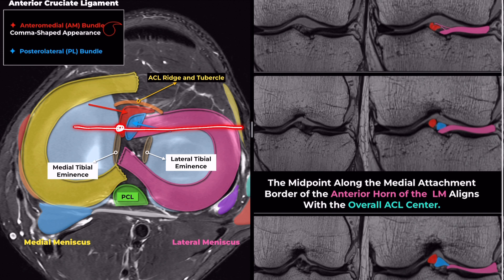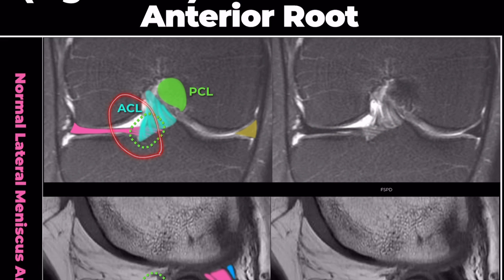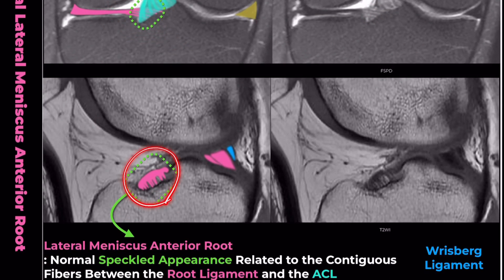Therefore, from medial to lateral, the anteromedial bundle, posterolateral bundle, and anterior horn of the lateral meniscus become visible. The anterior root of the lateral meniscus consists of three or more multiple fiber bundles and is fan-shaped. This fissured appearance on MRI is due to fibrofatty tissue interposed between the insertional collagenous fibers of the anterior root and interposed fibers of the ACL insertion.